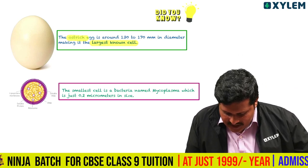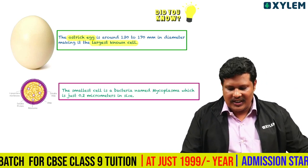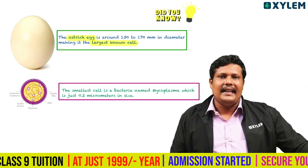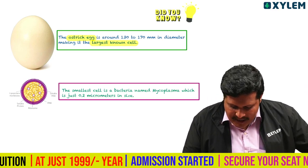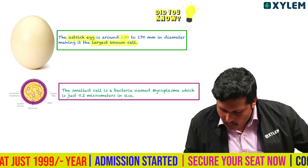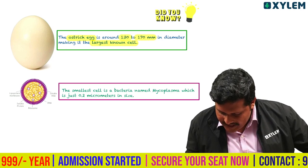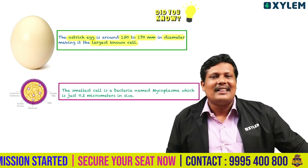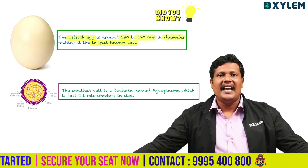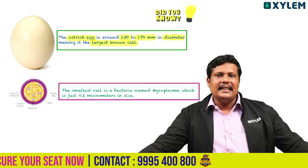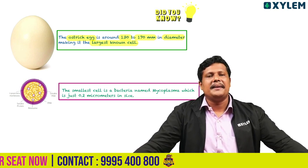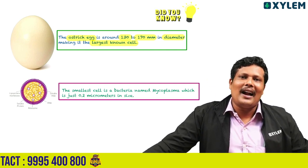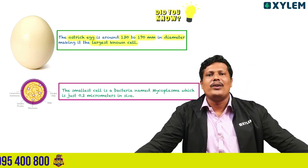The answer is the ostrich egg. It has a diameter of 132–170mm, or 13–17cm. The ostrich egg is the largest cell.